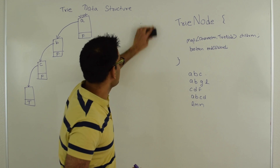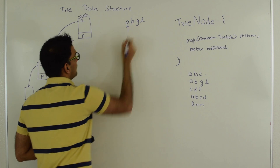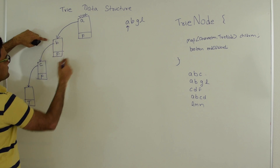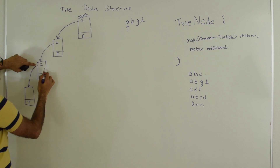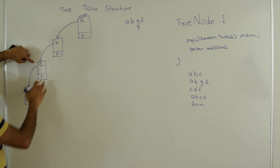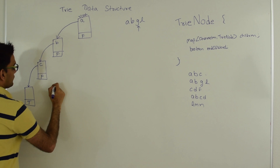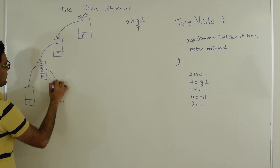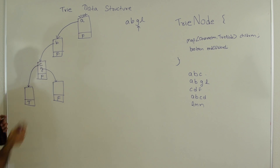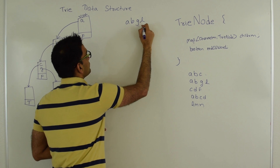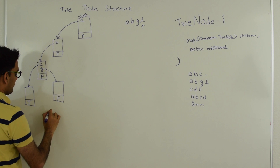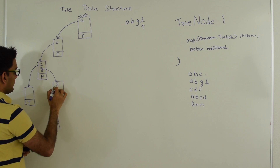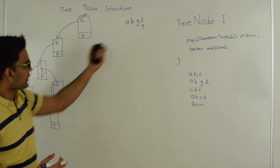Next let's try to insert ABGL. We start with A at root — root does have A, so we jump there. This Trie node does have B, so we jump there. Now our pointer is at G. This Trie node does not have G, so we create a new Trie node with end-of-word false, put G in the map. Then we move to L — L does not exist, so we create a new Trie node. Since L is the last character of this word, its end-of-word value is TRUE. We put L in the map pointing to this node. We are now done inserting ABGL.